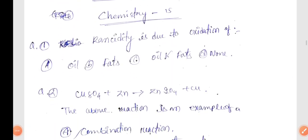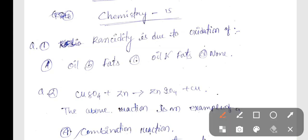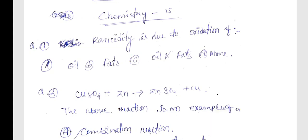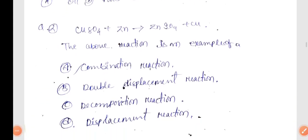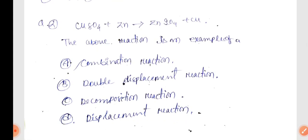Chemistry, first question: Rancidity is due to oxidation of what? The correct answer is Option C — Oil and Fats. Next, the reaction CuSO4 + Zn. The above reaction is an example of?